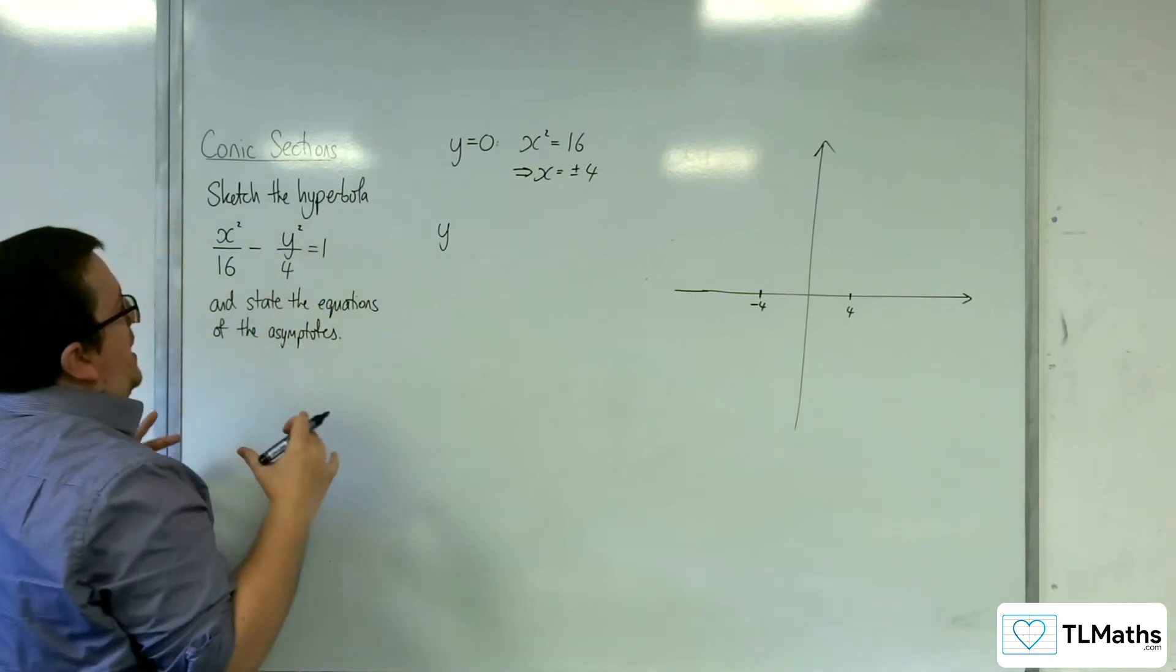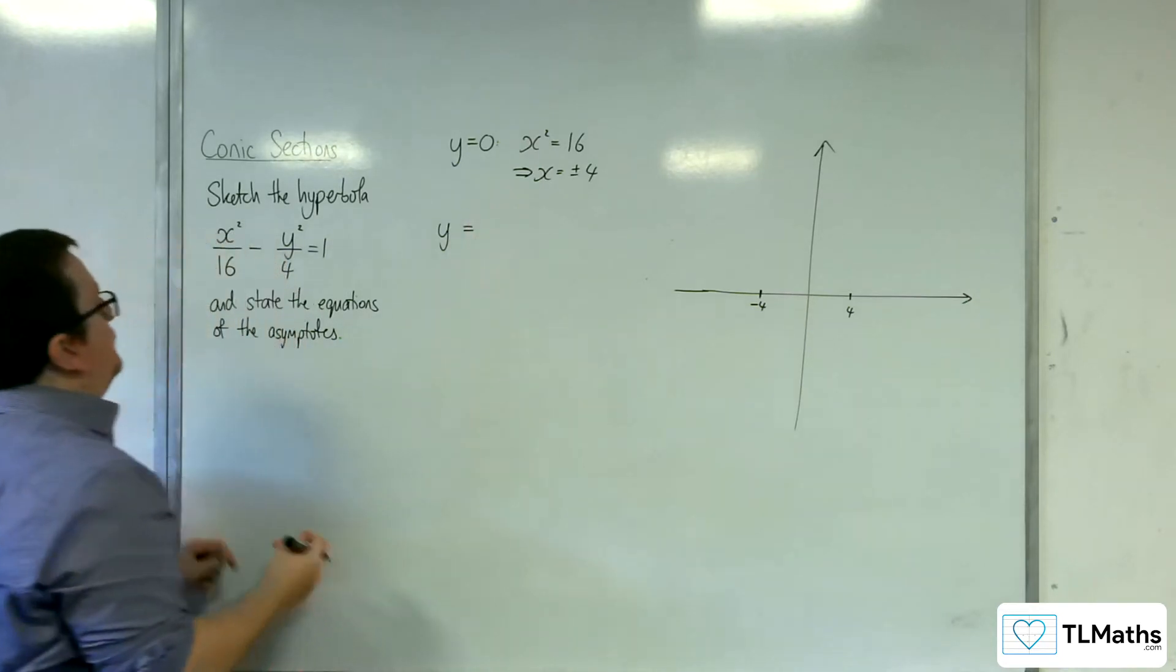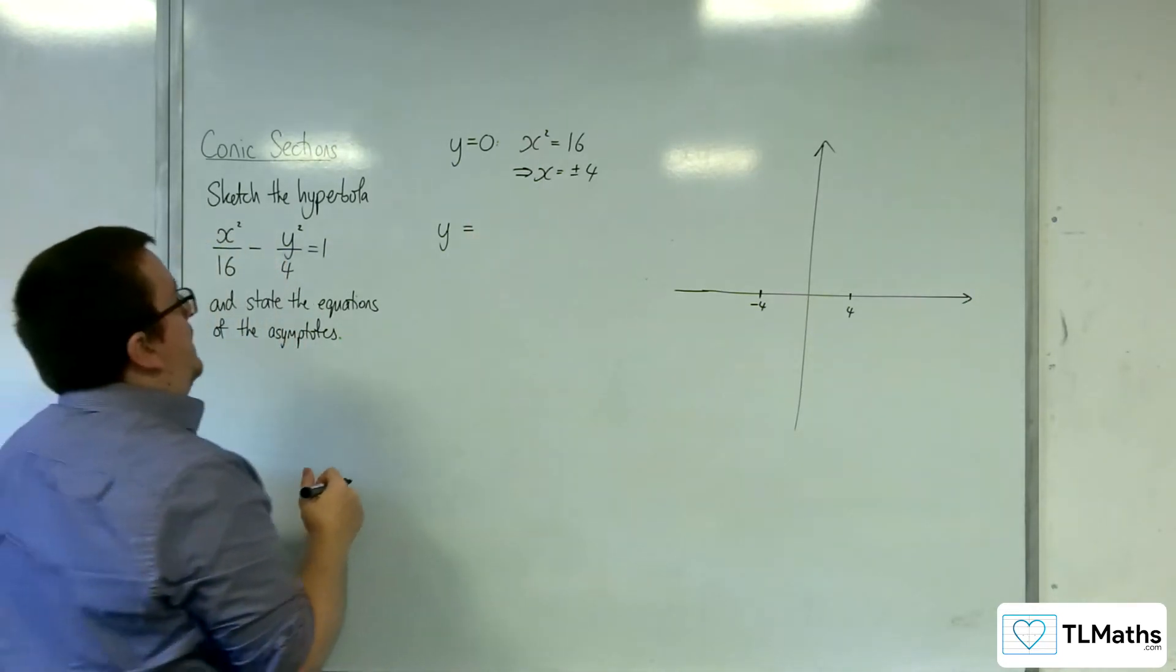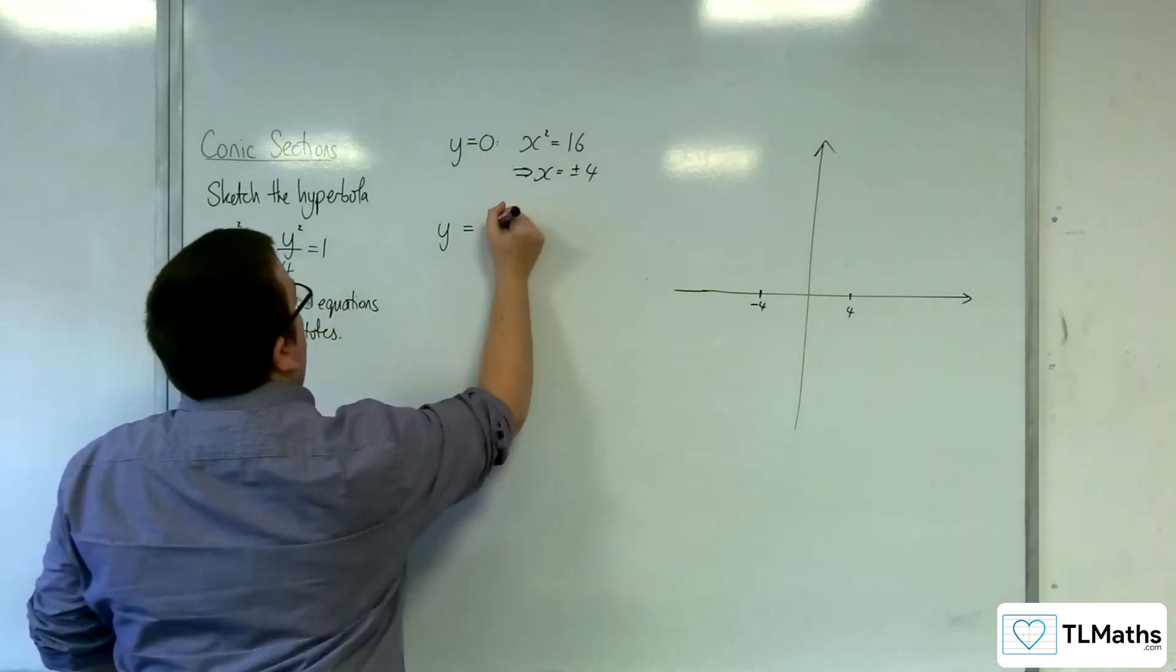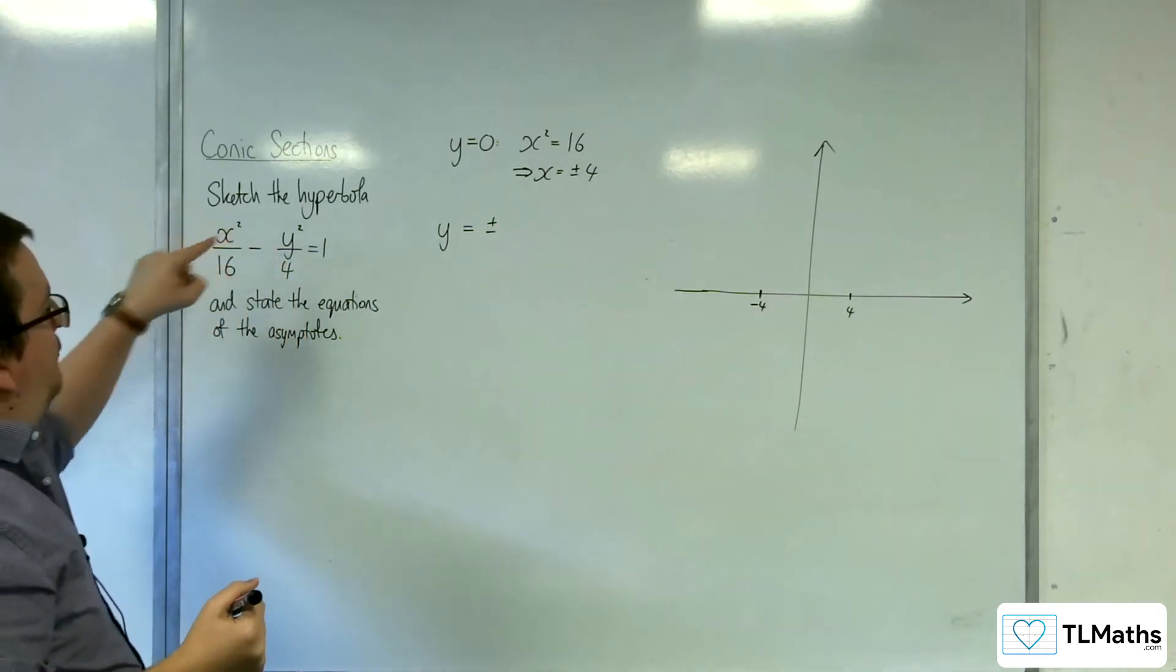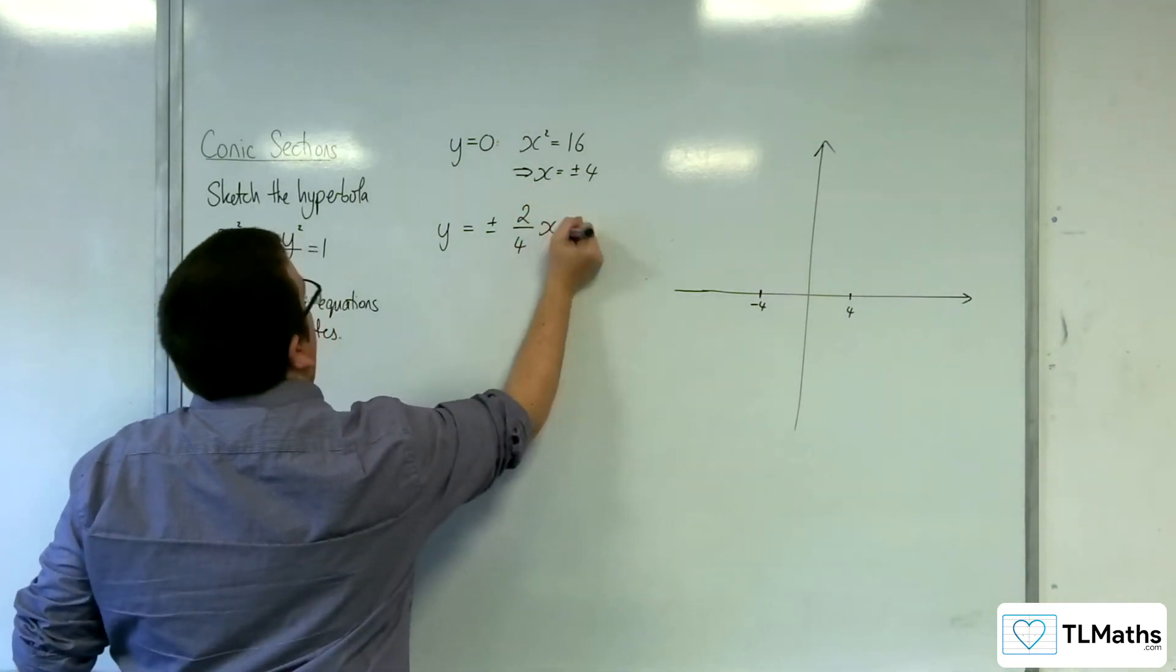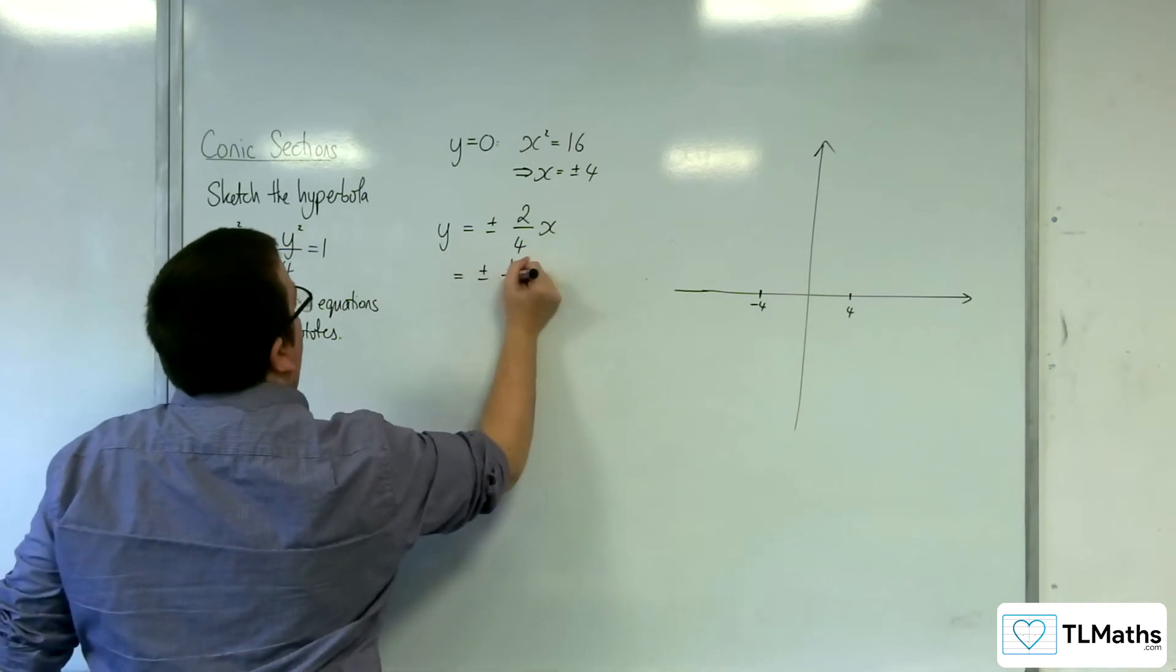So you can rearrange it and do the same job that I had before. Alternatively, you can see it like this. So y is equal to plus or minus, and it's going to be the square root of 4 over 16, so that's going to be 2 over 4x, so plus or minus a half x.